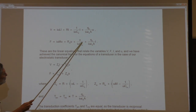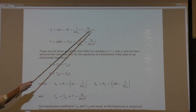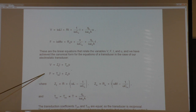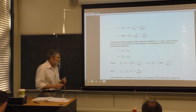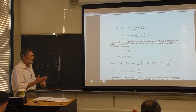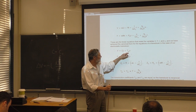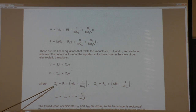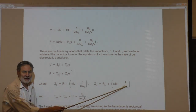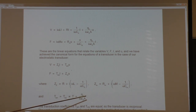To achieve the canonical form, we factor out current I — multiplied by the electrical impedance Zₑ — and factor out velocity u multiplied by the mechanical impedance Zₘ. We can now identify the electrical impedance, the mechanical impedance, and the transduction coefficients T_em and T_me.